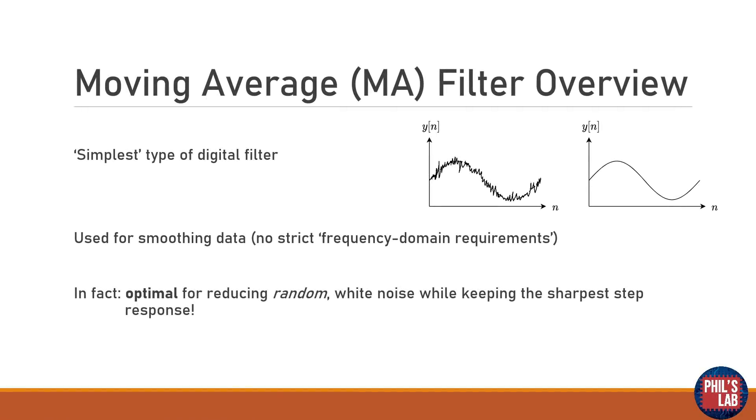The moving average filter or MA for short is the simplest type of digital filter. Essentially what we are doing with this filter is simply smoothing data. We don't have any strict frequency domain requirements, meaning that we don't have to cut out maybe a certain frequency or boost a certain frequency. All we are interested in is smoothing time domain data. It turns out in fact that the moving average filter is optimal for reducing random white noise while keeping the sharpest step response.